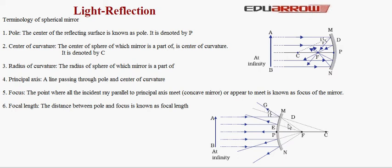Focal length: the distance between pole and focus is known as focal length. The distance PF is the focal length of the concave mirror, and the distance PF is the focal length of the convex mirror. The relation between focal length and radius of curvature of a spherical mirror is F equals R by 2. So the distance PF is half of the distance CP.